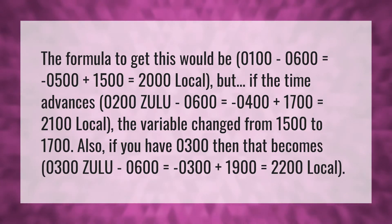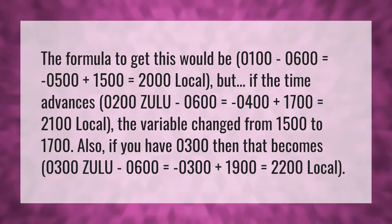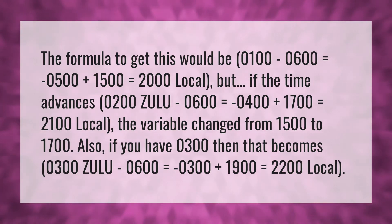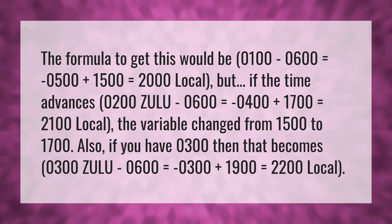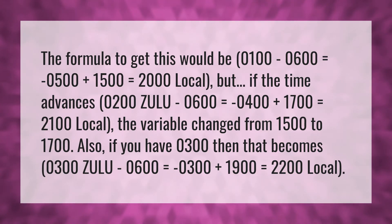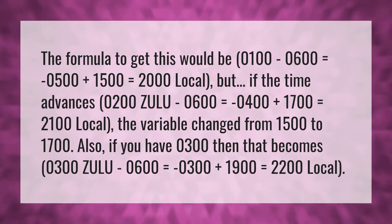The formula to get this would be: 0100 Zulu — 0600 equals 0500 plus 1500 equals 2000 local. But if the time advances to 0200 Zulu, 0600 equals 0400 plus 1700 equals 2100 local. The variable changed from 1500 to 1700.